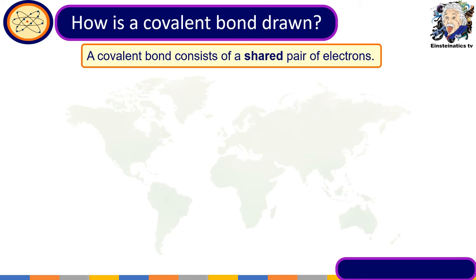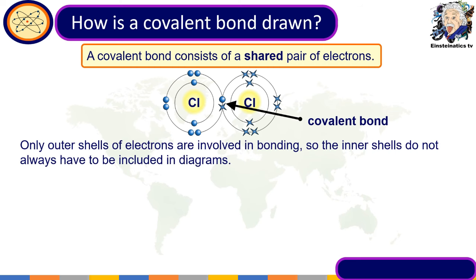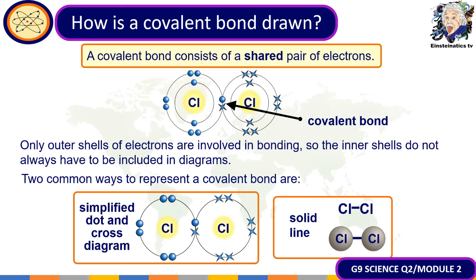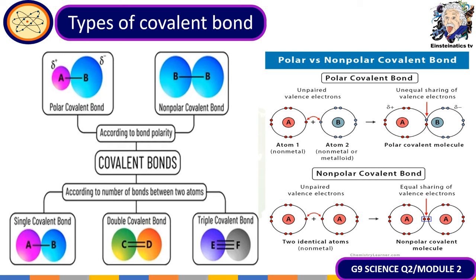How is a covalent bond drawn? A covalent bond consists of a shared pair of electrons. Only the outer shells are involved in bonding — inner shells do not always have to be included in the diagram. There are two ways to represent a covalent bond: using a simplified dot-and-cross diagram, or using a solid line. There are different types of covalent bonds — categorized first by bond polarity: polar covalent bond or non-polar covalent bond.